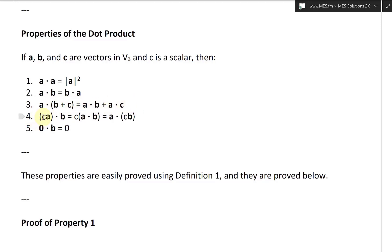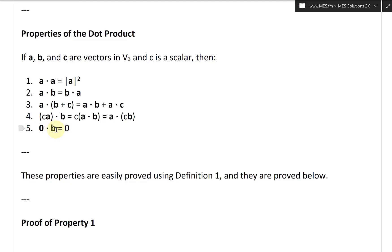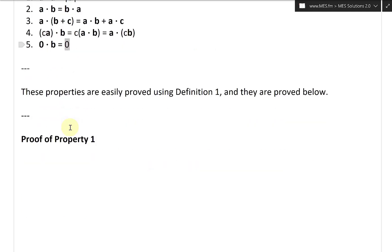Property 4: a scalar C times A, dot product with B, equals C times (A dot B), which also equals A dot (C times B) — you can factor out or move the scalar inside. Property 5: if you have the zero vector dot B, this just equals zero, a real number scalar.